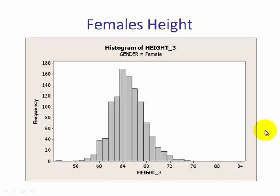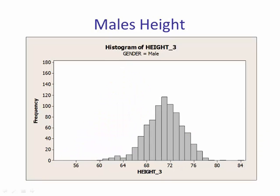Here is the height variable, but separated for just females — this would be approximately symmetric, and we'd even say this is bell-shaped. Looking at the males, we can see they have a different center, but this distribution is also roughly bell-shaped and symmetric.